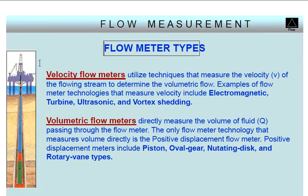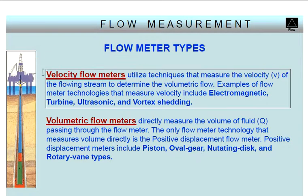Velocity type flow meters utilize techniques that measure the velocity of the flowing stream to determine the volumetric flow. Examples of flow meter technologies that measure velocity include electromagnetic, turbine, ultrasonic, and vortex shedding.